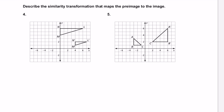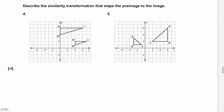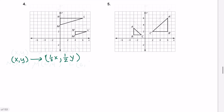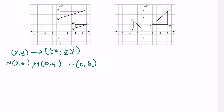Next I'm going to describe the similarity transformation that maps the pre-image to the image. The original shape is bigger — a length of 2 here versus 1 there, and 6 units versus 3 units. So each side is exactly half the size of the pre-image. I'll take points M, N, and L and multiply each x and y by one half. Half of 0 is 0, half of 6 is 3, and so on for the other points.